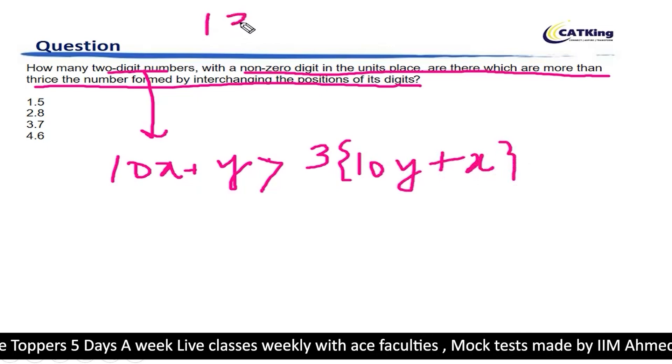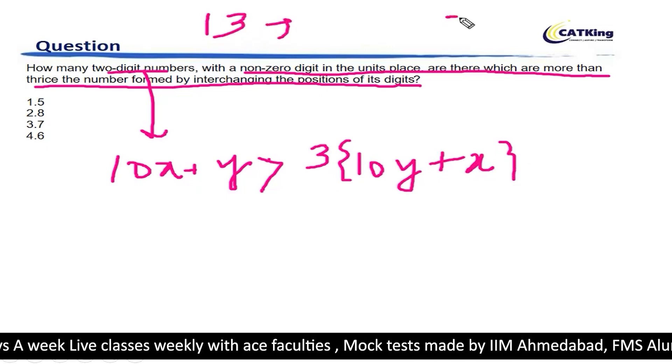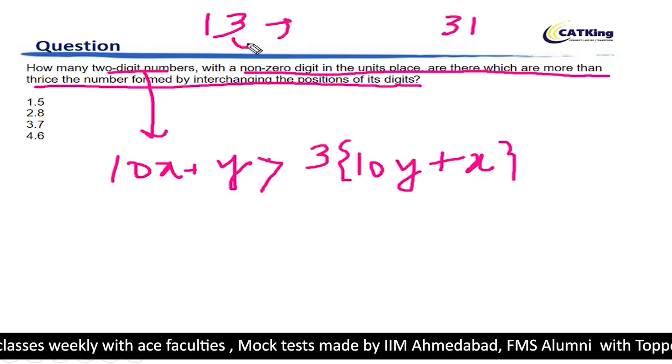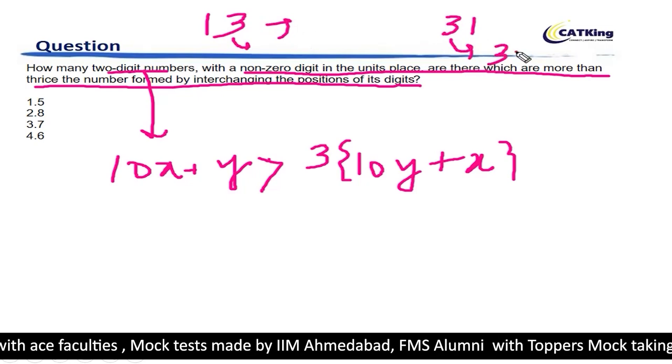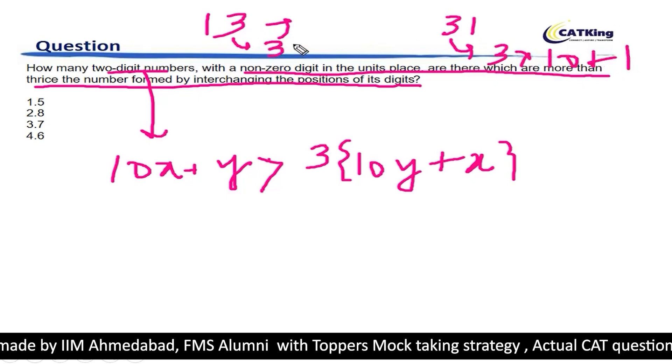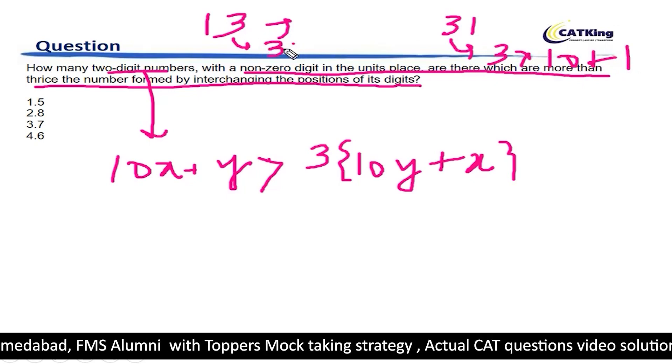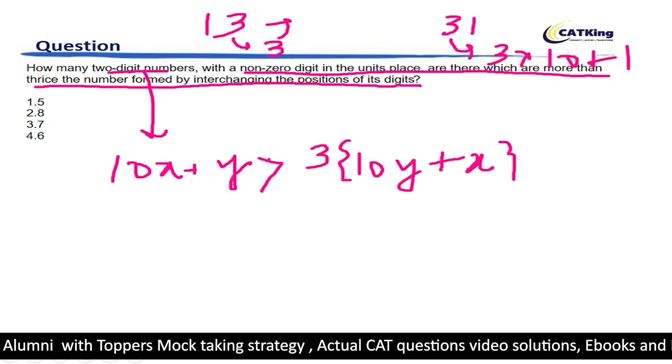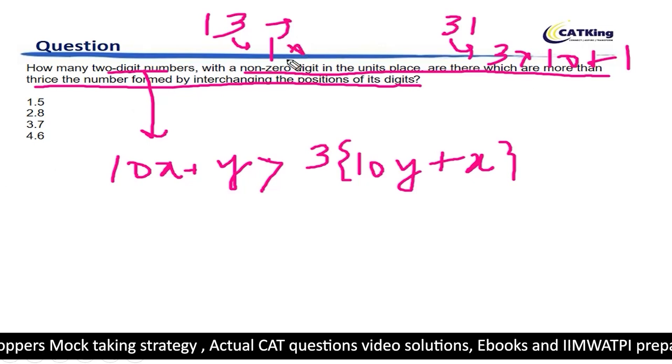For example, let's say there is 13 and there is 31. So 31 can be written as 3 into 10 plus 1. However, if you interchange it, it will become 1 into 10 plus 3.